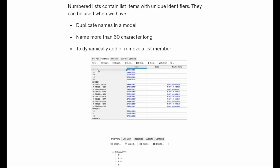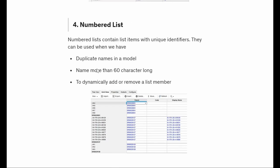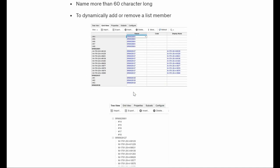Another type is the numbered list, which is a special kind of list. The normal list has some limitations - for example, we can't have two members with the same name. There are three conditions when we have to use a numbered list: first, when we want two list members with the same name; second, when a name is more than 60 characters; and third, when we want to dynamically add or remove members from a list. When any of these conditions apply, we use the numbered list.